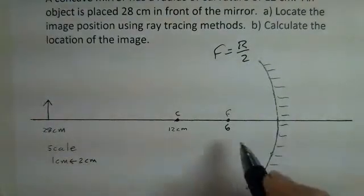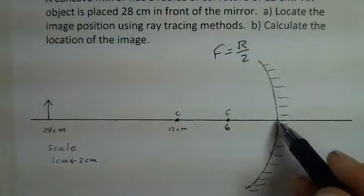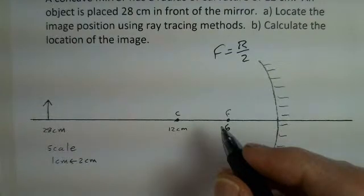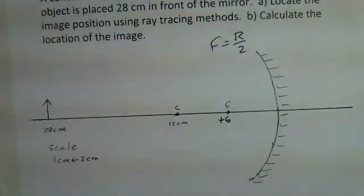And concave, we're looking sort of into a cave, and the center of the mirror on the optic axis is farther away from us than the edges of our mirror. So it's a concave system. It is a positive 6 centimeters for the focal length. The concave mirror is a positive mirror. And I'm doing a scale drawing here where 2 centimeters in the problem are 1 centimeter on the sketch.